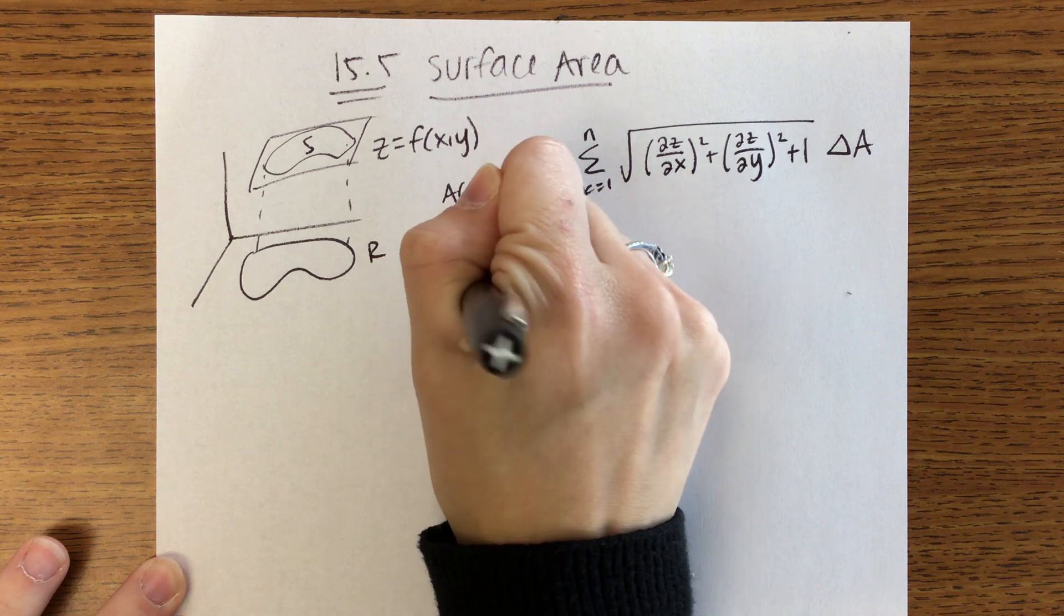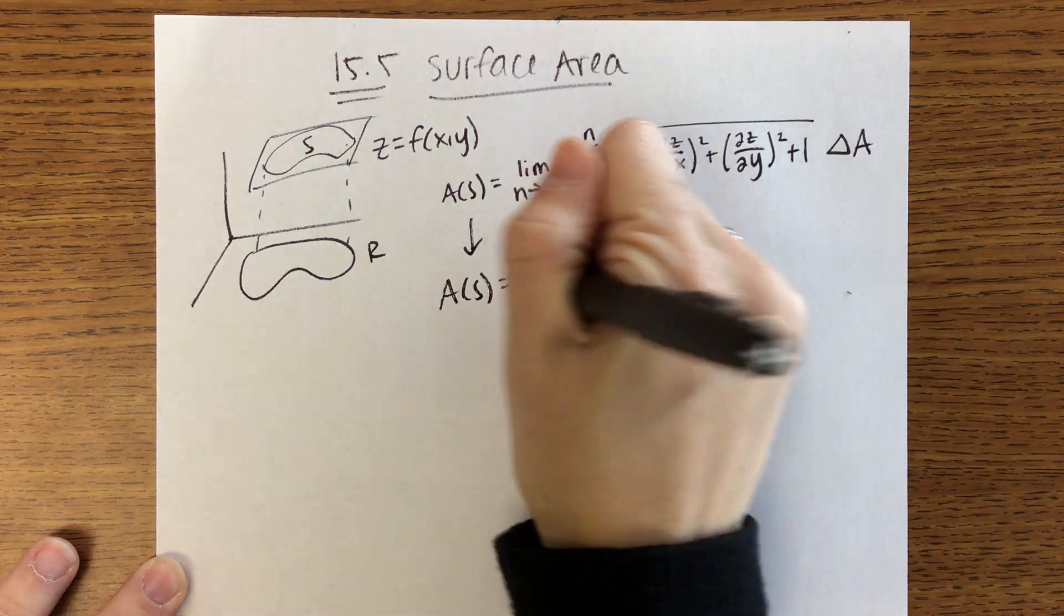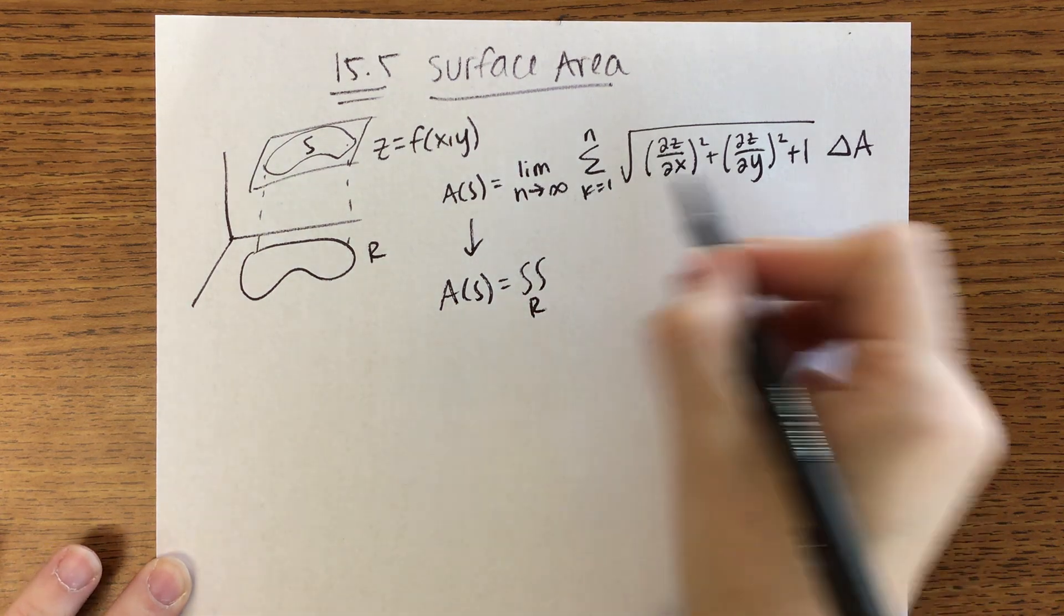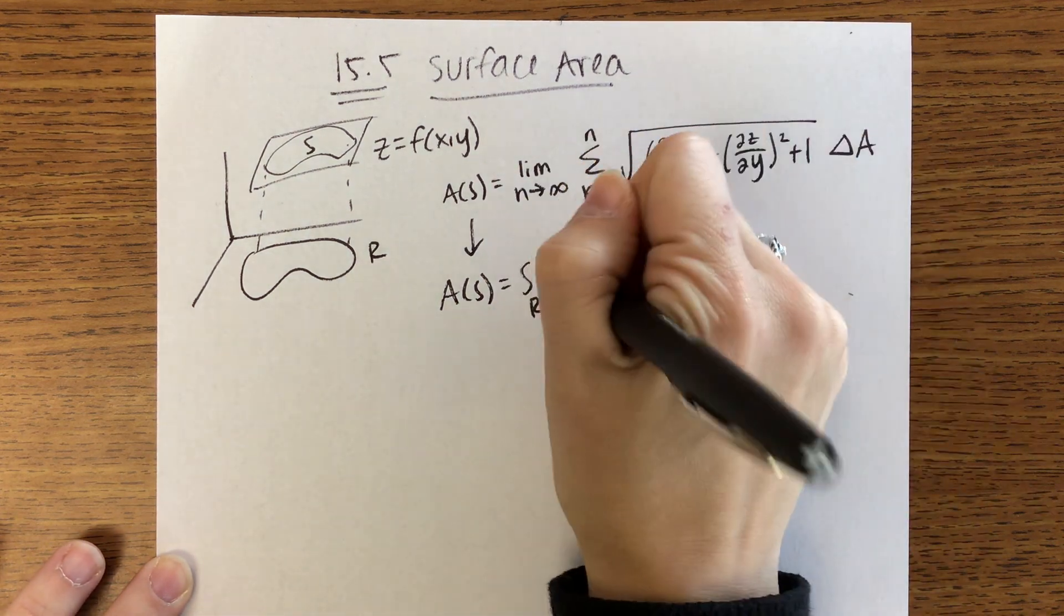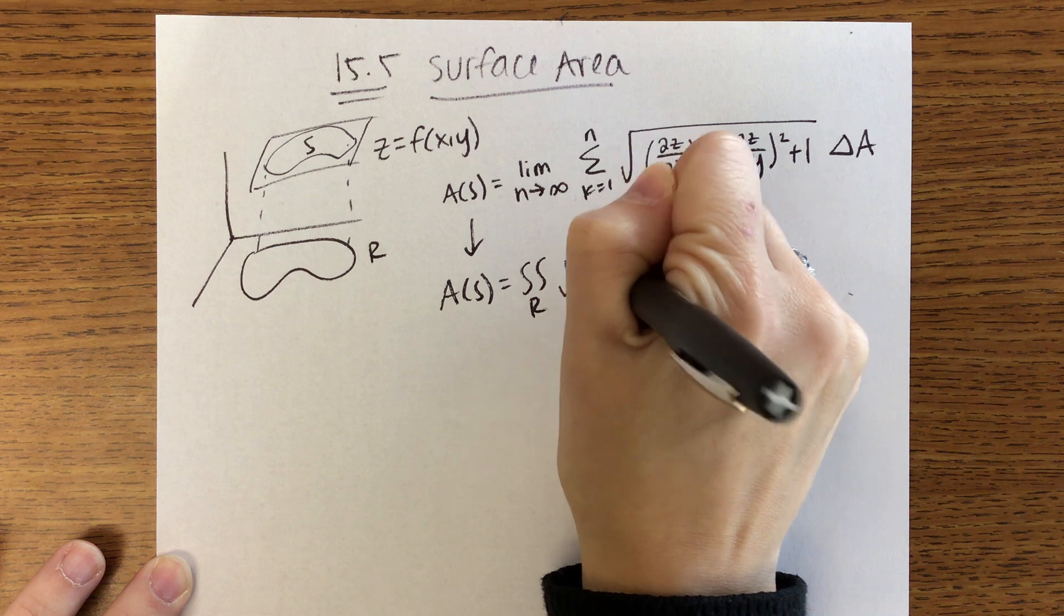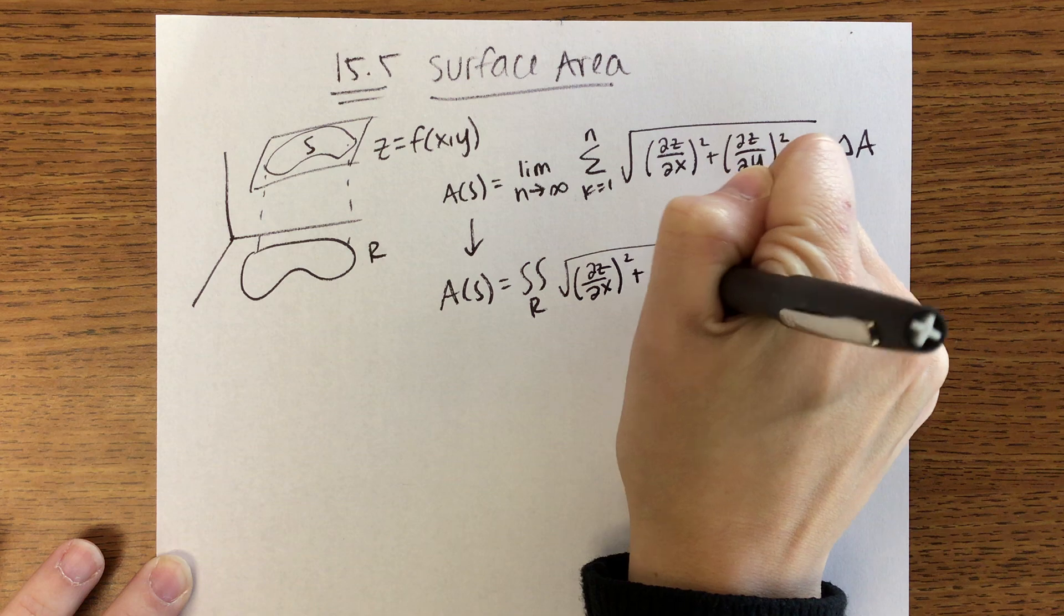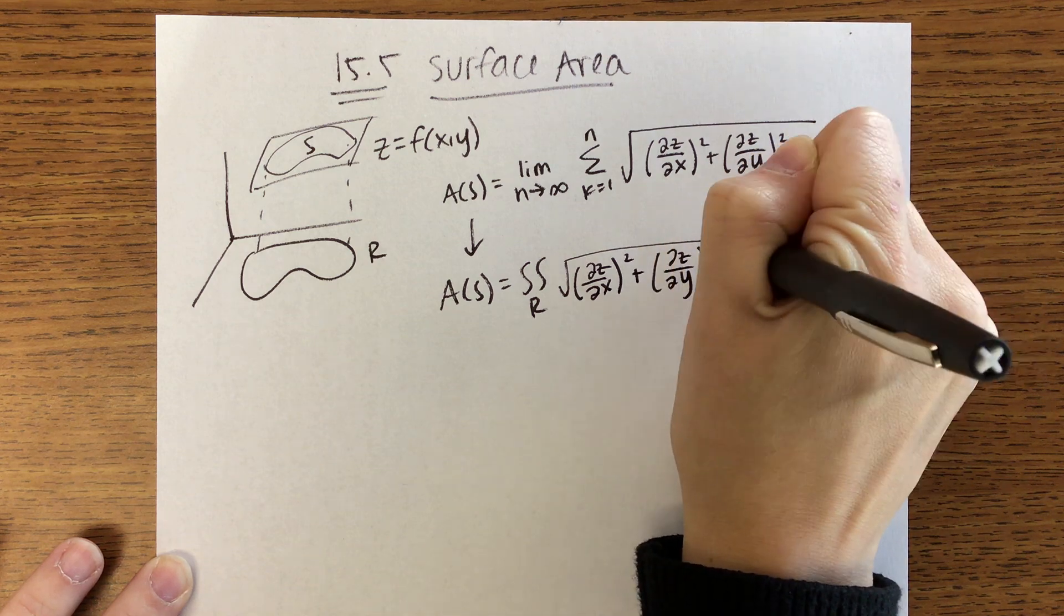Here's what we care about, though. So realistically, what we're going to do is we're going to take double integral over that region R of that whole square root. So the first partial of Z with respect to X squared, first partial of Z with respect to Y squared, plus 1, and then that delta A turns into a DA.